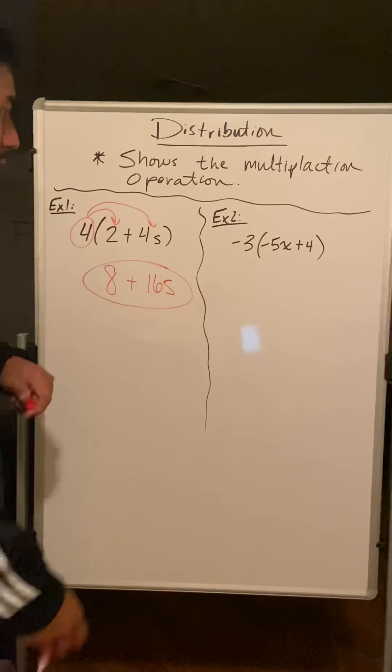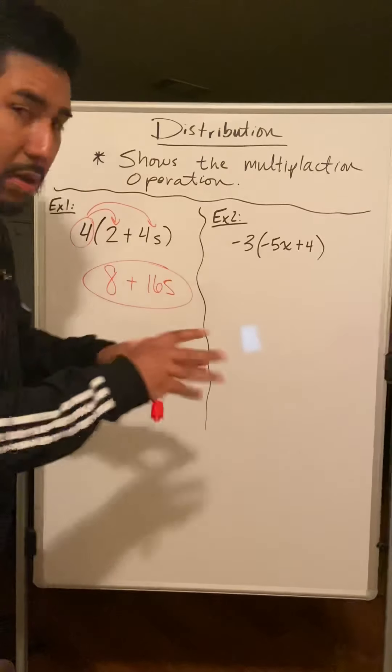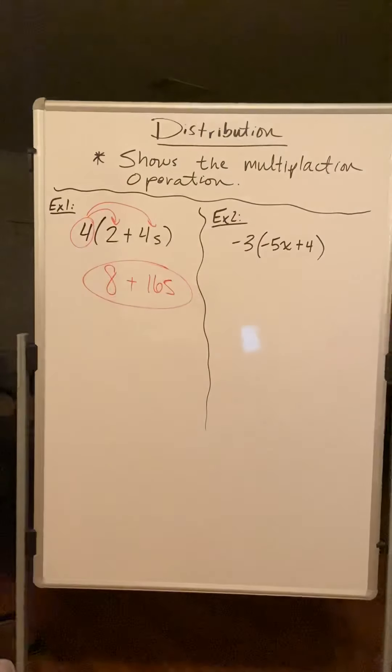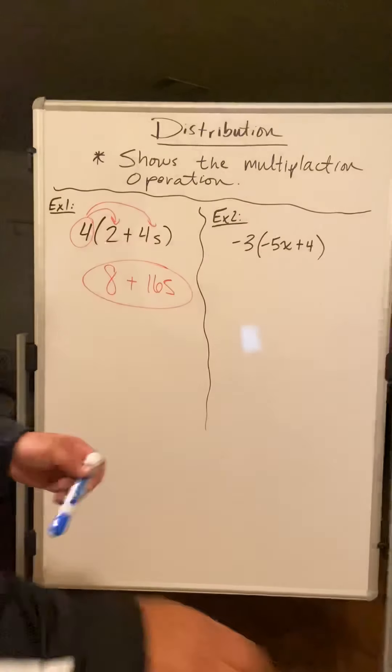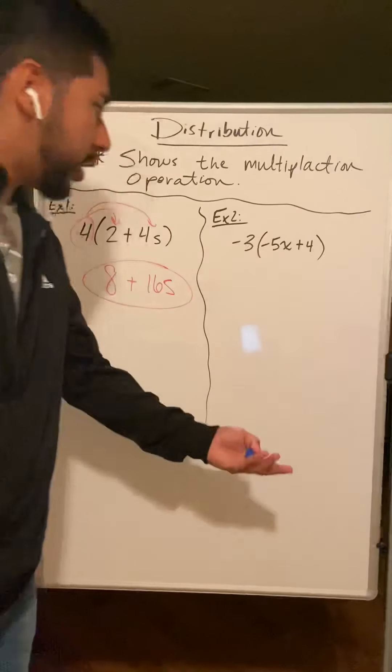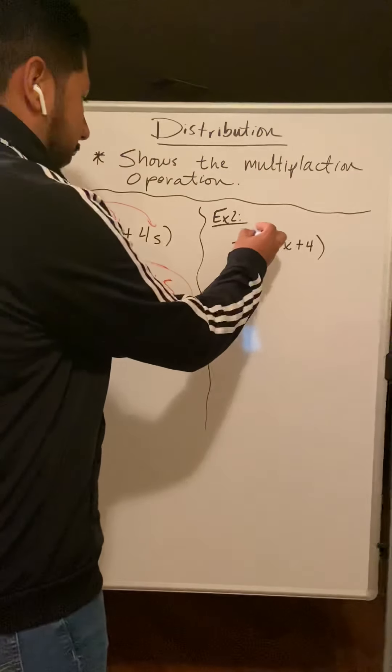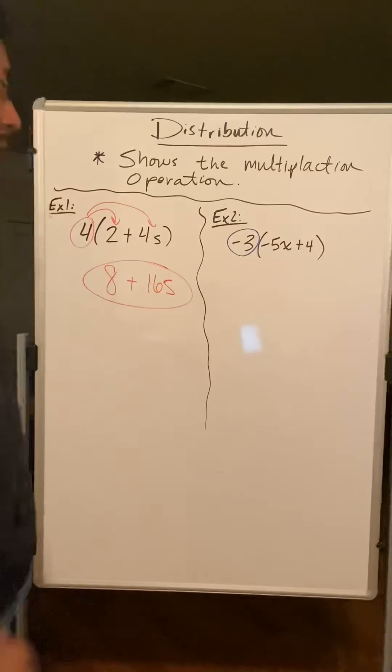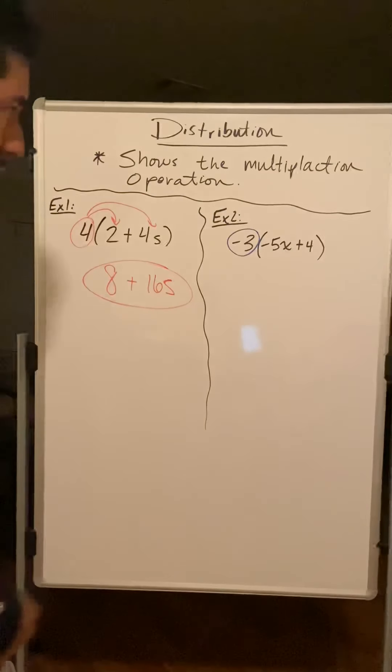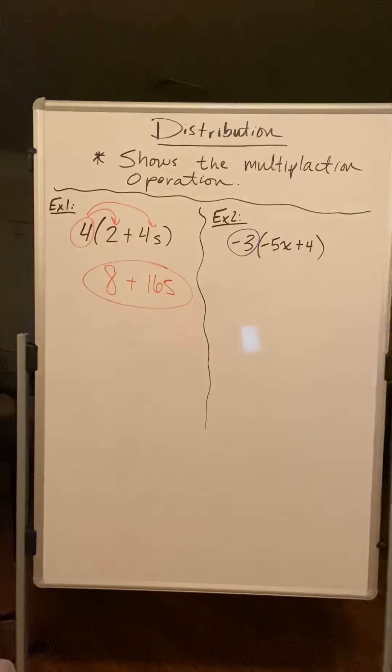Pretty straightforward. If you don't know what exactly I did, rerun the video or email me. Let's check the next one: negative three, negative five x, four. Who should I circle? Who's the person I need in order to start doing my multiplication? Yes, it's negative three.